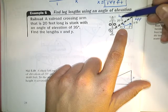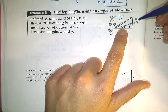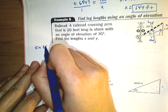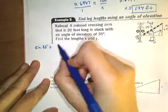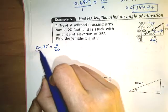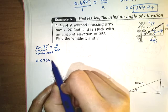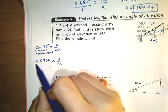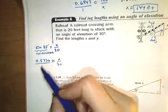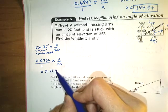We have three trig choices: sine, cosine, or tangent. The one that combines opposite and hypotenuse is sine. So the sine of 35 degrees equals opposite (x) over hypotenuse (20). Using the calculator, sine of 35 degrees is approximately 0.5736. Cross multiplying — one times x is x, and 0.5736 times 20 is about 11.47 feet.